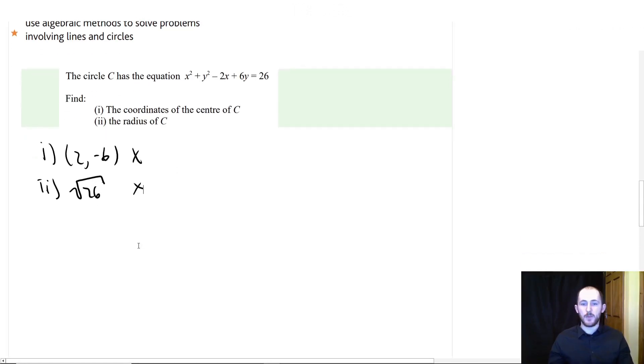So x squared minus 2x and y squared plus 6y. They might say the center is 2 and minus 6. And then they'll say the radius is whatever the square root of 26 is. Both of these are wrong. Because if you look, it's not in this form. So now we need to talk about how you actually get that form.